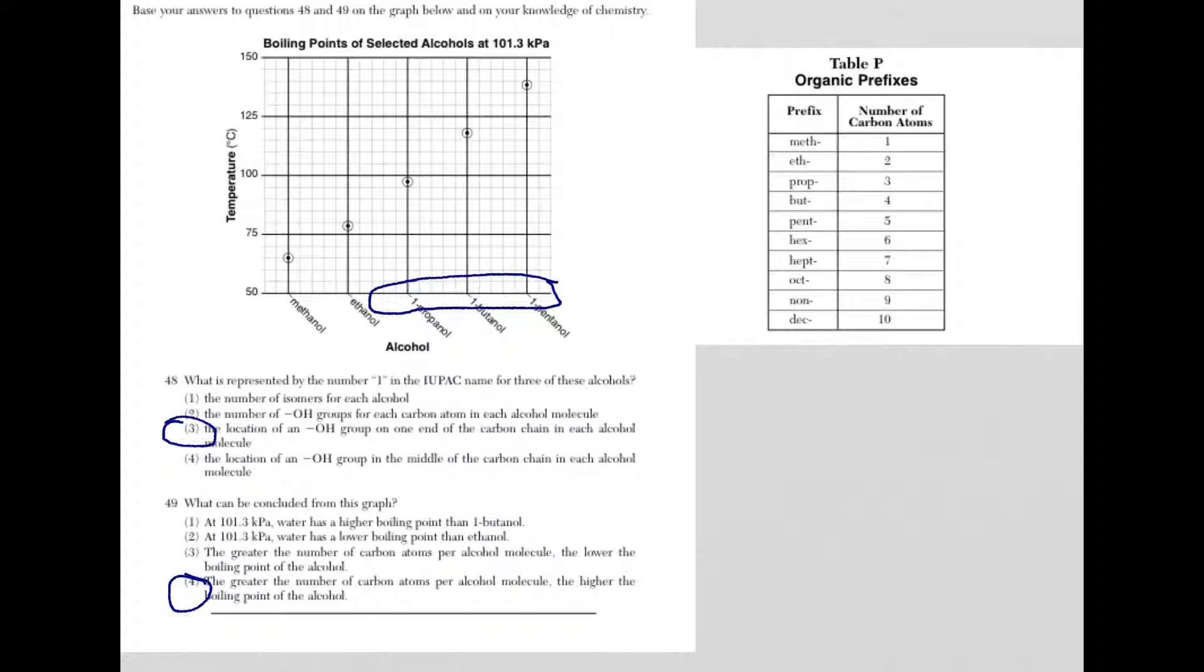So number 1 means that the OH was on the first carbon. When you learn how to name organic compounds, that's a basic piece of information that you should know. So did you need the rest of the information on the graph to answer that question? And my answer to you is no.